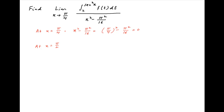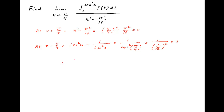Also, at x equal to π/4, the value of sec²x — which is the upper limit of the integral in the numerator — is equal to 1 over (cos(π/4))², which is equal to 1 over (1/√2)², which is equal to 2. Therefore, the value of the numerator at x = π/4 is equal to the integral of f(t) dt from t = 2 to t = 2. Since the lower and upper limits are equal, the value of the numerator is equal to 0.